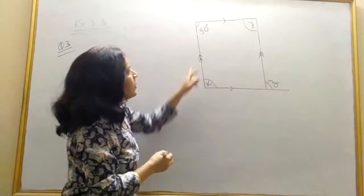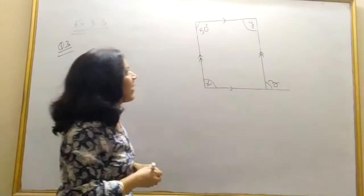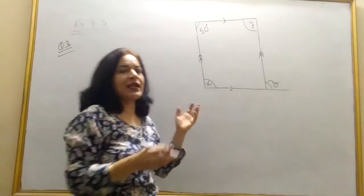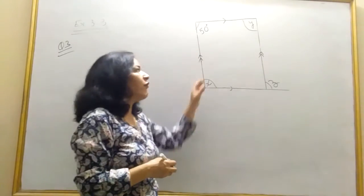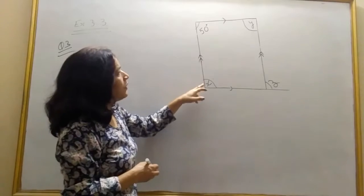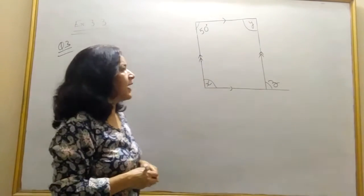So opposite sides are equal and parallel, and we have to find if it is parallelogram. It will follow all the properties of parallelogram. So we have to find x, y, and z.